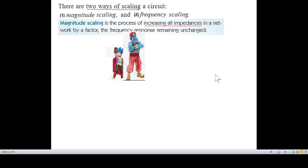So what is scaling? There are two types of scaling. One is called magnitude scaling and the other is called frequency scaling. Magnitude scaling is the process of increasing all impedances in a network by a factor. If the original impedance is 1, it's increased 10 times. That is called scaling.